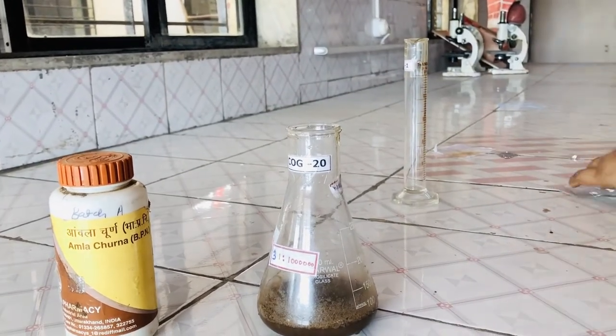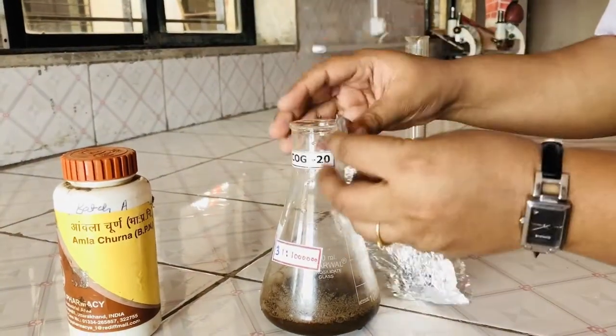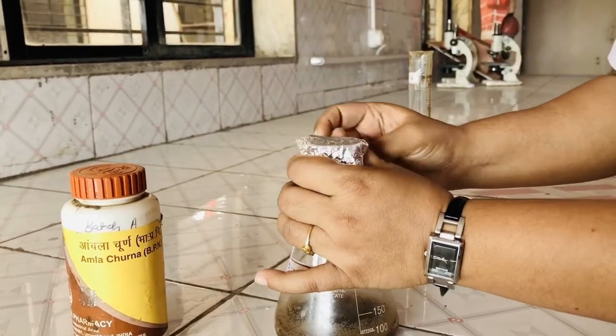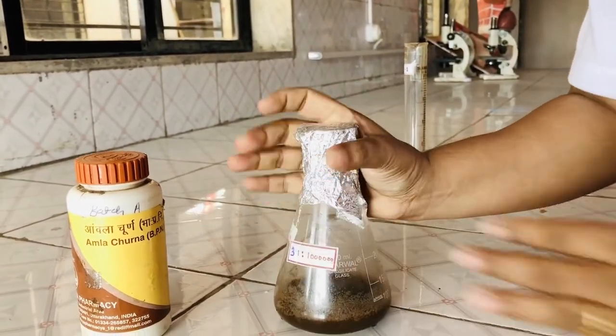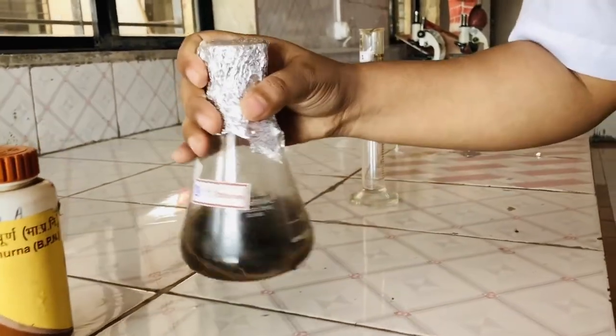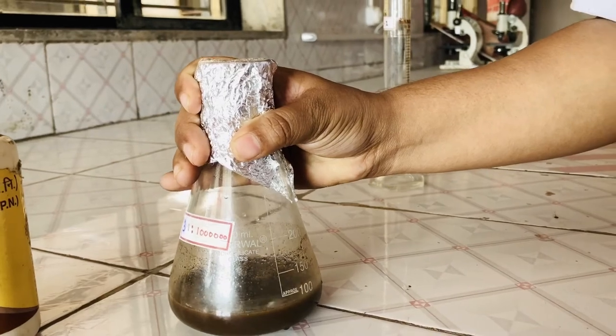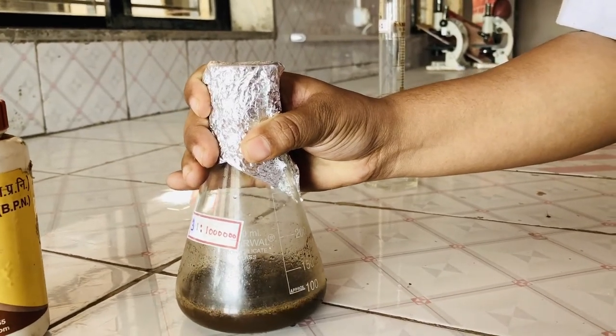Now we are covering this with the help of aluminum foil. You can also use a cork for this. You have to mix it properly and now we will keep this on the water bath for heating for the next 30 minutes.